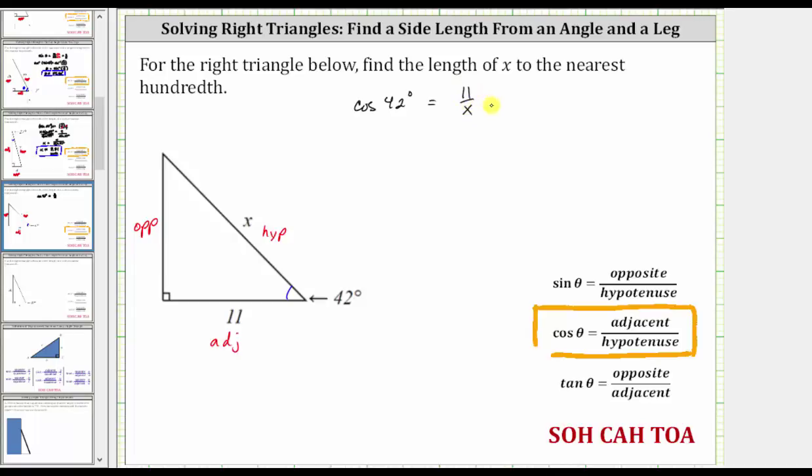Now for the next step, let's clear this fraction from the equation by multiplying both sides by x, which gives us cosine 42 degrees times x equals eleven divided by x times x.